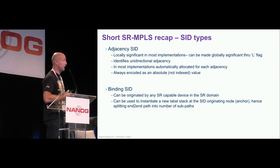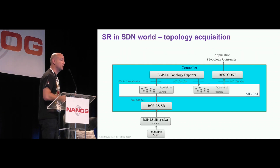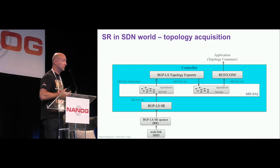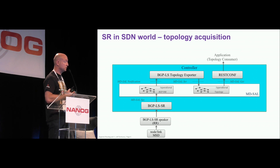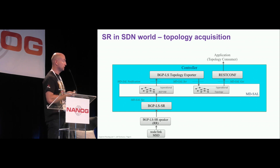Binding SID is a SID that describes a particular action on the node that is the anchor node — the node that instantiates the binding SID. I'm using an OpenDaylight structure here. This is what you would see in every modern transport SDN controller. We learn the topology, usually through BGP-LS, and build the graph. Node-link MSD is an attribute that defines how many labels can be pushed at a particular device, either at the link level — imagine you've got different line cards, different generations of ASICs on a single device — or you would use the minimum value. This is how we acquire the topology, the SIDs, and the MSDs.